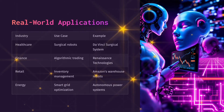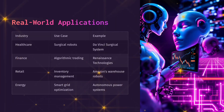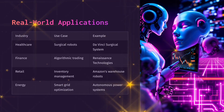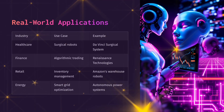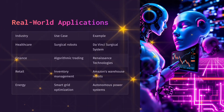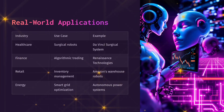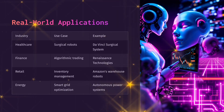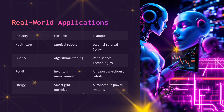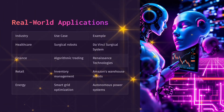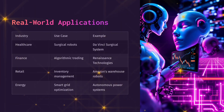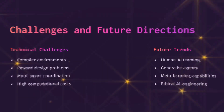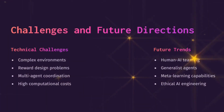Real-world applications by industry: Healthcare — surgical robots, e.g., DaVinci Surgical System. Finance — algorithmic trading, e.g., Renaissance Technologies. Retail — inventory management, e.g., Amazon's warehouse robots. Energy — smart grid optimization with autonomous power systems.